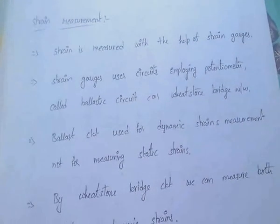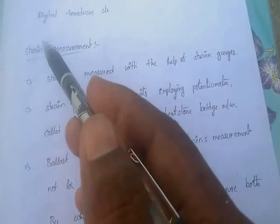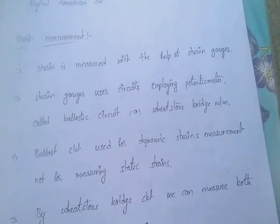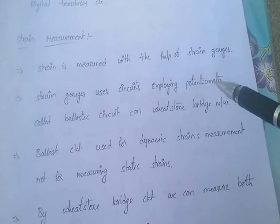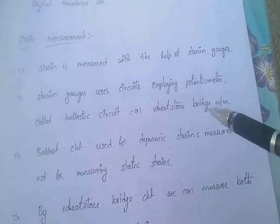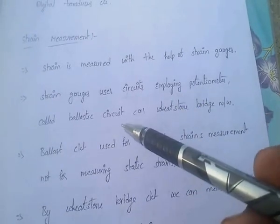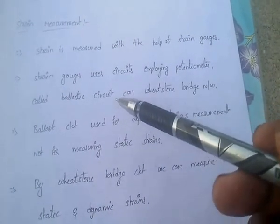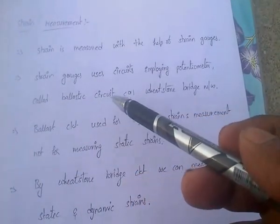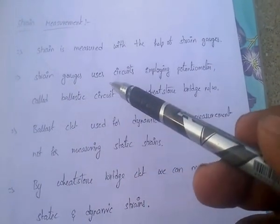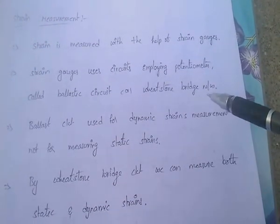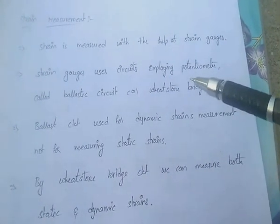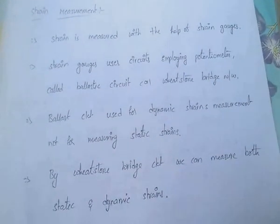Next, strain measurement. Strain is measured with the help of strain gauges. Strain gauges use a circuit employing either a ballastic circuit or a Wheatstone bridge network. The ballastic circuit is used only for dynamic strain measurement, but not for static strains. The Wheatstone bridge network can be used to measure both dynamic and static strains.